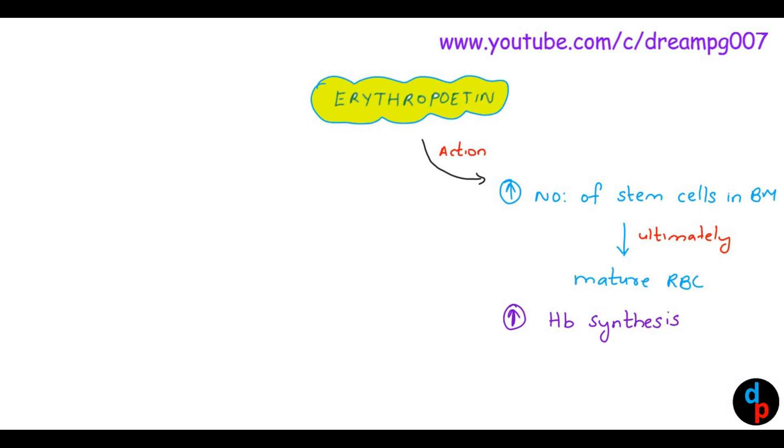Erythropoietin potentiates the enzyme delta-aminolevulinic acid synthetase, which increases globin synthesis. This leads to increased synthesis of hemoglobin. The half-life of erythropoietin is about five hours.